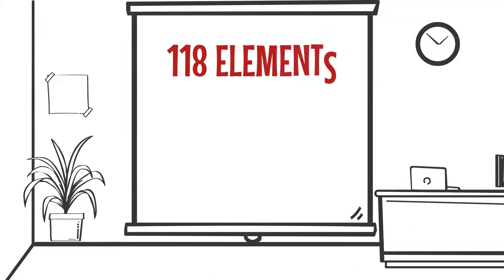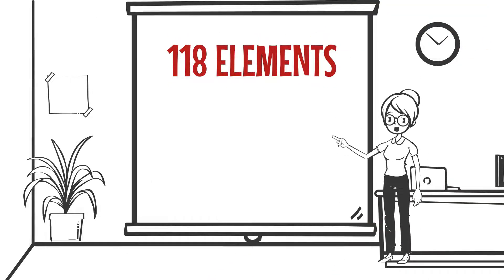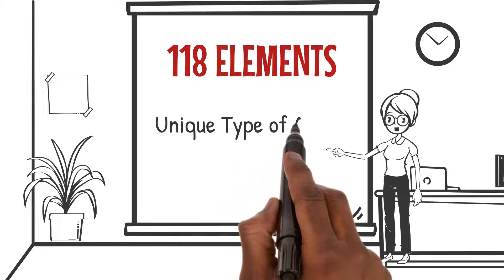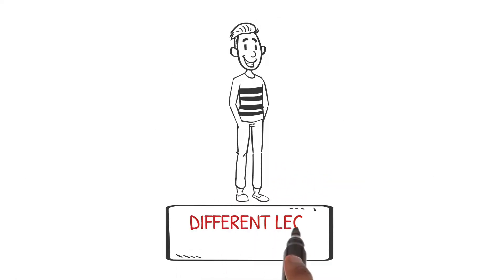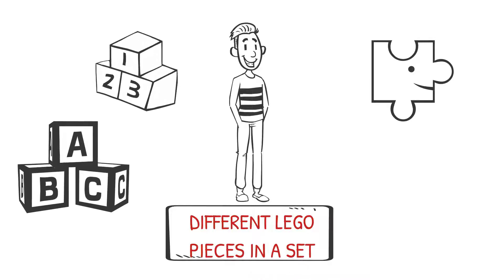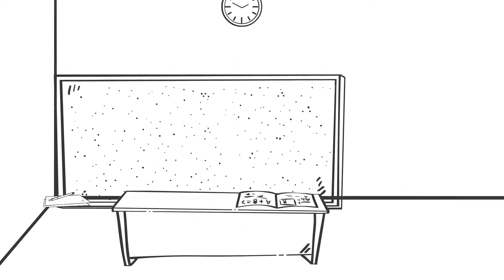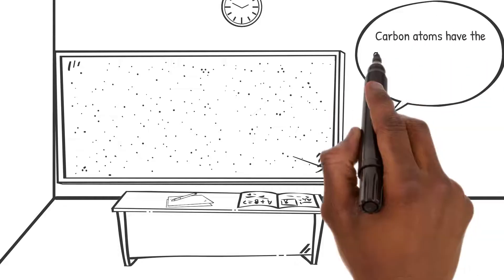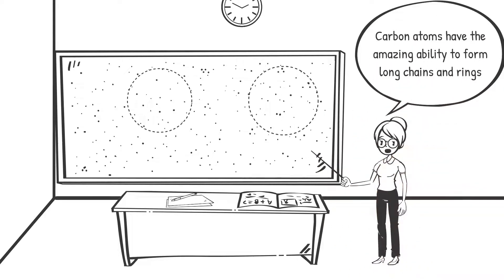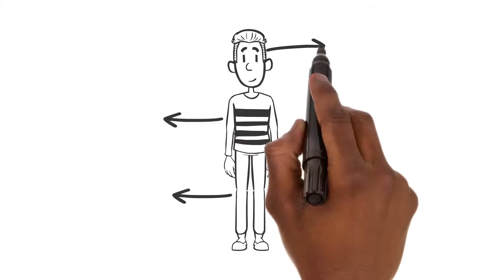There are 118 known elements in the universe, and each element is made up of its unique type of atoms. Just like different Lego pieces in a set, each element has its own special characteristics. Carbon atoms have the amazing ability to form long chains and rings, making them the backbone of many essential molecules. In fact, our own bodies are composed of carbon-based compounds.